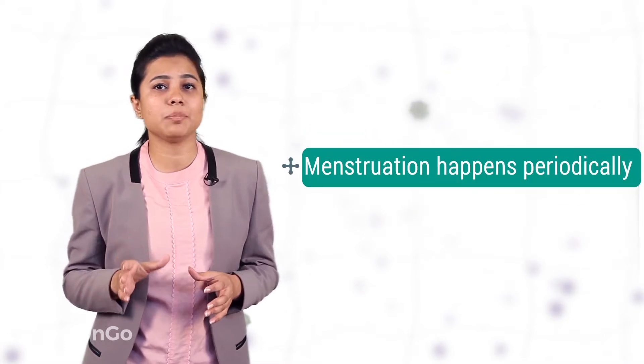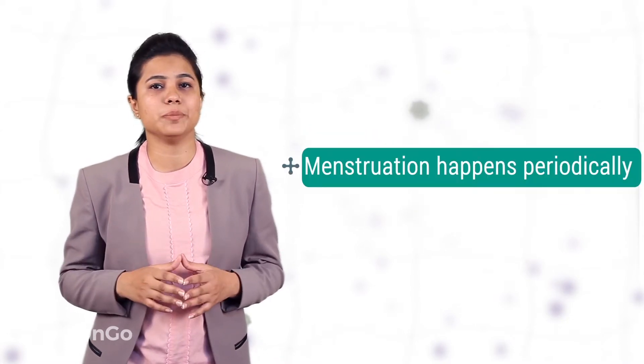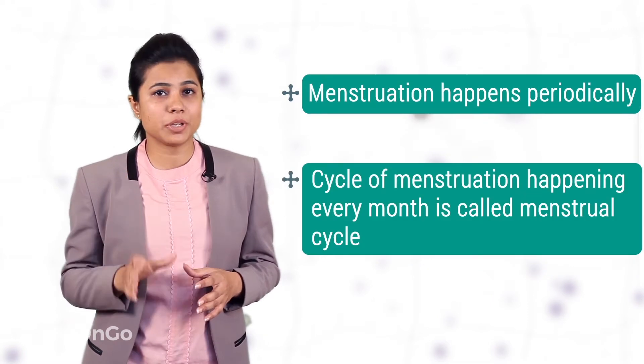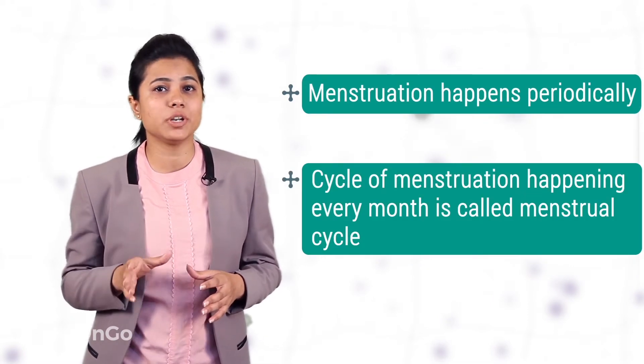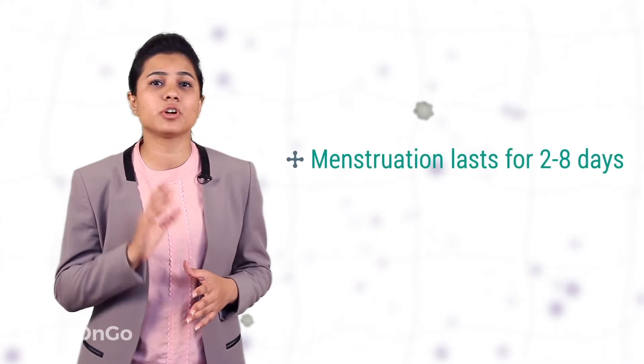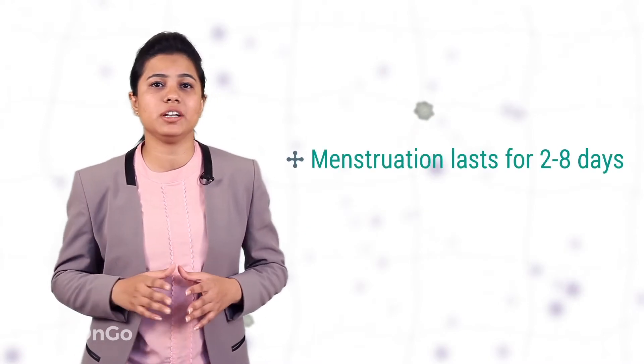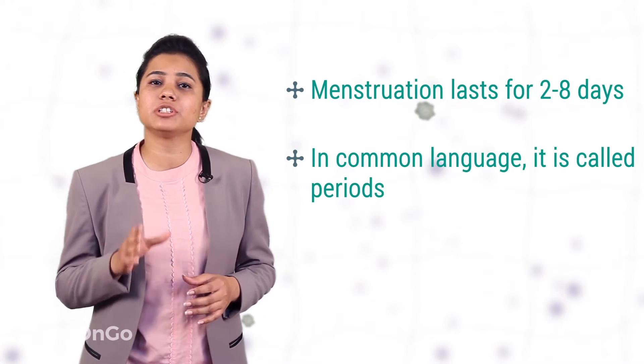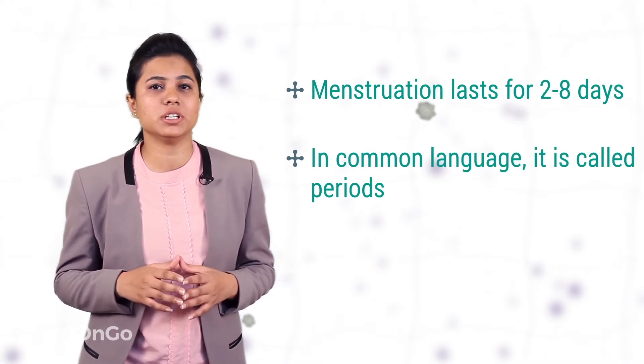We know that the egg is released from the ovary periodically, and therefore if the egg is not fertilized, menstruation also happens periodically. This cycle of menstruation which happens every month is called as the menstrual cycle. Menstruation normally lasts for two to eight days. In common language, menstruation is also called as periods.